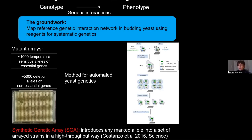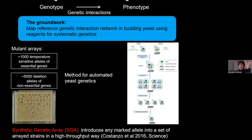To manipulate these arrays and make double mutants to study genetic interactions, a student in our lab, Amy Tong, developed a method for automating yeast genetics called SGA, or synthetic genetic array analysis. This method relies on features of the yeast life cycle and allows us to introduce a marked allele of any gene of interest into arrayed strains in a high-throughput way. We start with a query strain in which we've deleted gene A, take it through a series of replica-pinning steps involving mating to the arrays, and at the end we get a double mutant array. We can then measure phenotypes associated with each single mutant and the double mutant and compare them to infer genetic interactions.